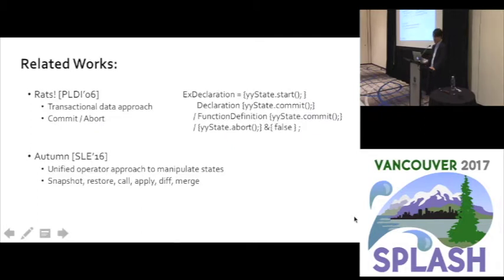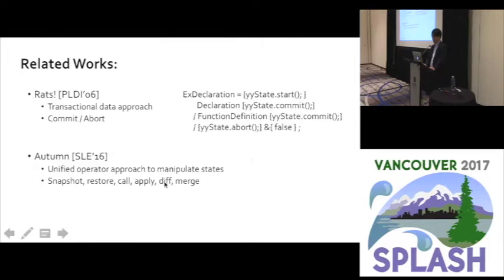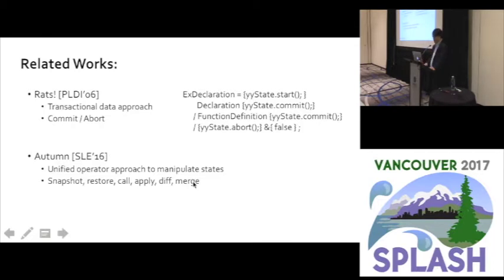Two significant backtracking support approaches are studied in the context of PEGs. One is the seminal PEG-based parser generator which takes a transactional data approach, providing commit-style APIs that allow grammar developers to write semantic actions. The other is OTHAM, a recent PEG-based parser generator presented at last year's conference, which provides unified operators — snapshot, restore, apply, and merge — to automate state management. But context-sensitive matching still relies on writing action code.